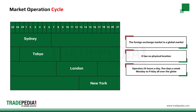Trading starts on Sunday night at 2200 hours GMT in Sydney. Tokyo joins Sydney two hours later, and by the time Tokyo closes at 0900 GMT, London has already opened at 0800 GMT. At 1300, New York also opens, and we have both London and New York open until London closes at 1600 hours — this is the most liquid period of the day with the highest volume. When London closes, trading continues in New York until 2200 hours when it closes and Sydney opens, and the cycle starts again until Friday night.